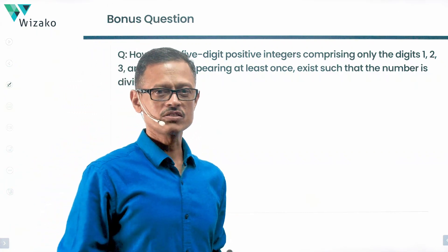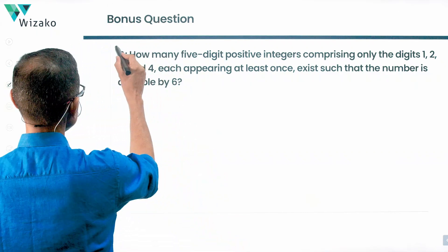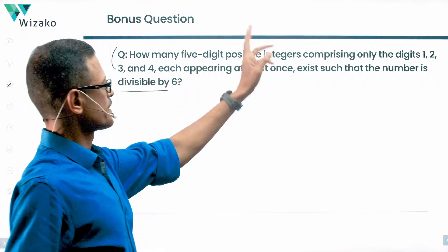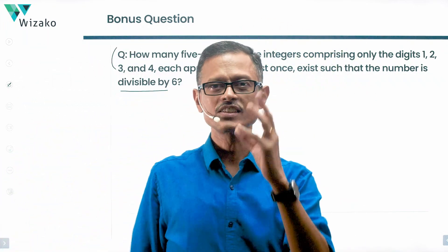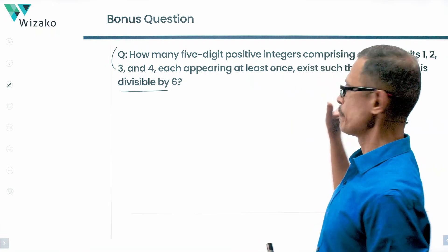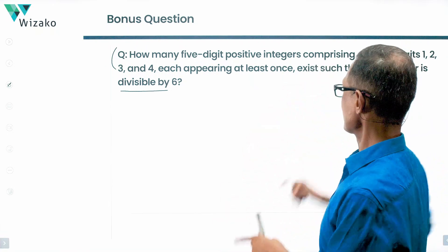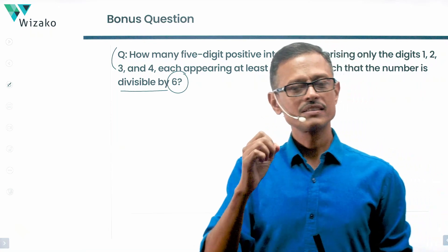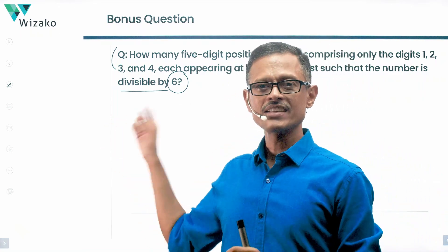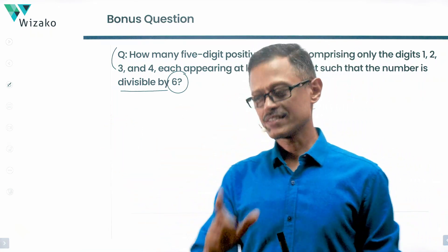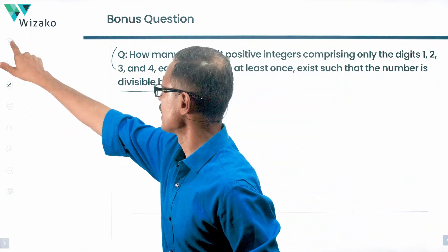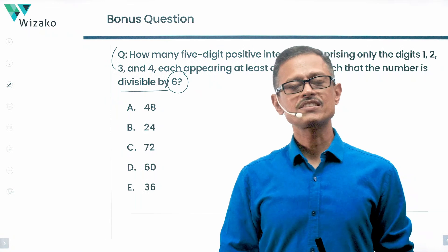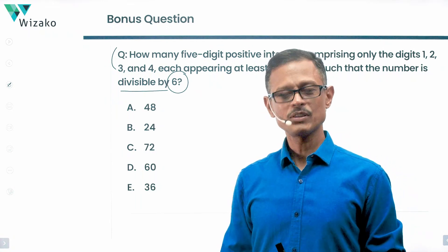Here is a bonus question along with this question. I maintained everything exactly the same: how many 5-digit positive integers comprising only the digits 1, 2, 3, and 4, each appearing at least once, exist such that the number is divisible by 6? The original question had the number divisible by 4; in this case it's divisible by 6. These are the 5 answer options. Solve this question, pick the correct answer, and post your answers in the comment section of this video. Best wishes.